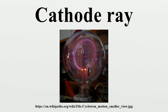Electrons were first discovered as the constituents of cathode rays. In 1897, British physicist J.J. Thomson showed the rays were composed of a previously unknown negatively charged particle, which was later named the electron. Cathode ray tubes use a focused beam of electrons deflected by electric or magnetic fields to create the image in a classic television set.